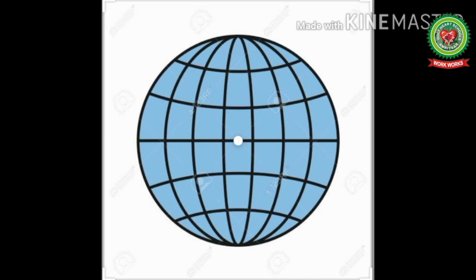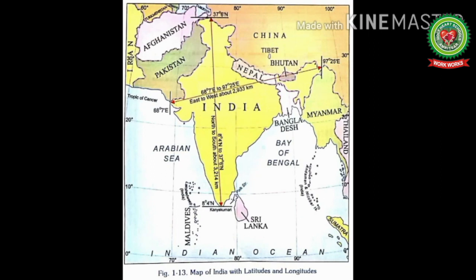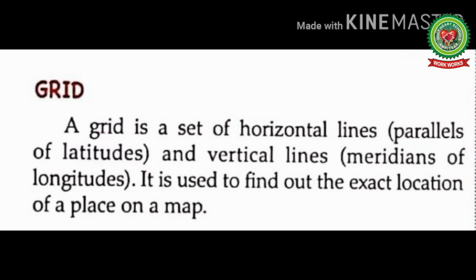I hope it is clear to you all. A grid is a set of horizontal lines, parallels of latitudes, and vertical lines, meridians of longitudes. Here parallels are known as latitudes and longitudes are also known as meridians. Look at the map of India in your book. A line running from east to west is known as latitude or parallel, and a line running from north to south is known as longitude or meridian. It is used to find out the exact location of a place on a map.